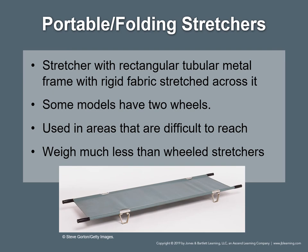Portable folding stretchers have a strong rectangular tubular metal frame with rigid fabric stretched across it. They do not have a multi-positioning frame or adjustable undercarriage. Some models have two wheels to make moving easier. The legs should not be used as handles. Some models can be folded in half for storage. These are used in areas that are difficult to reach or when a second patient must be transported on the squad bench. They weigh much less than wheeled stretchers and lack a bulky undercarriage; however, you and your team must support all of the patient's weight since most models do not have wheels.